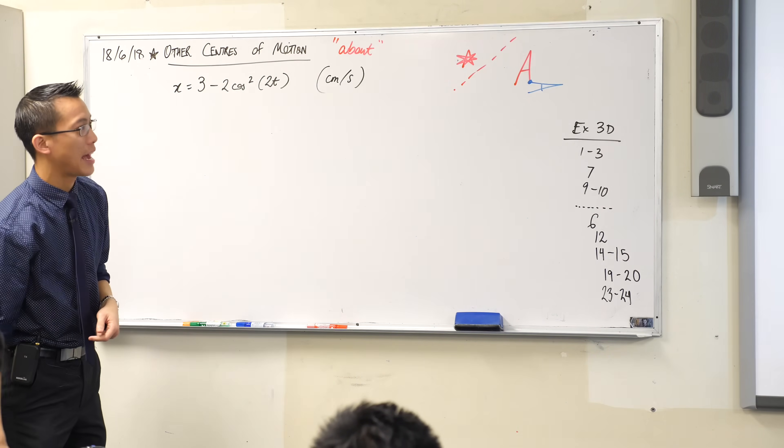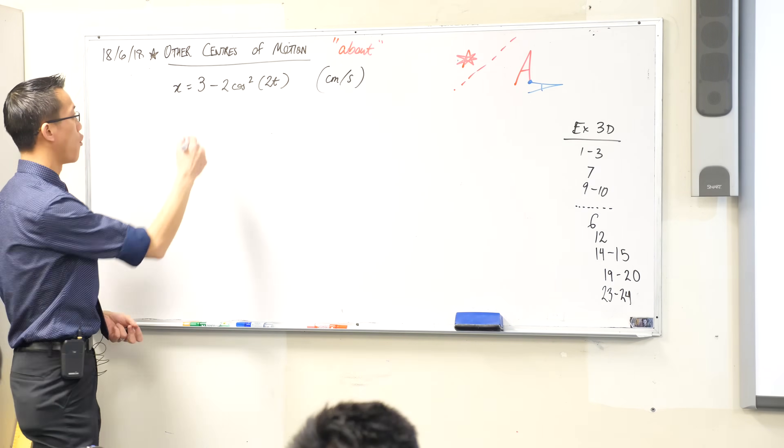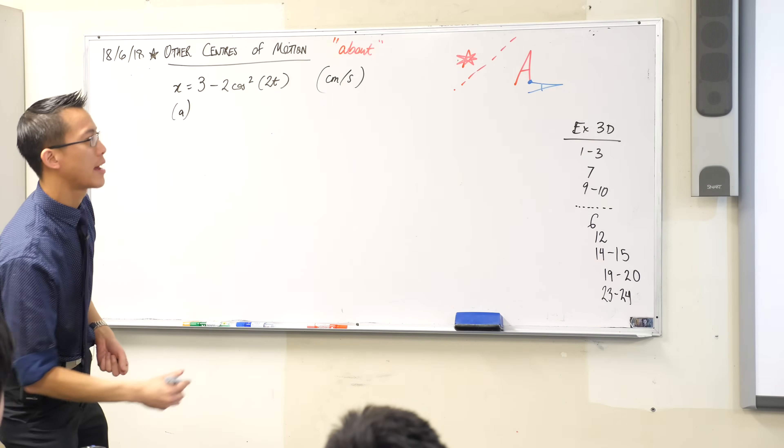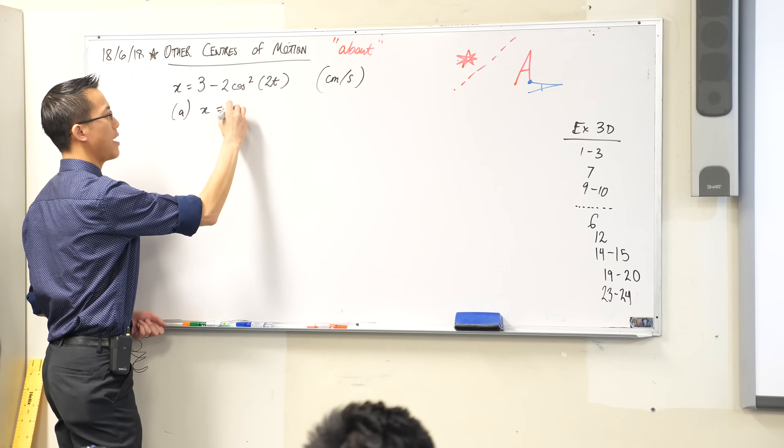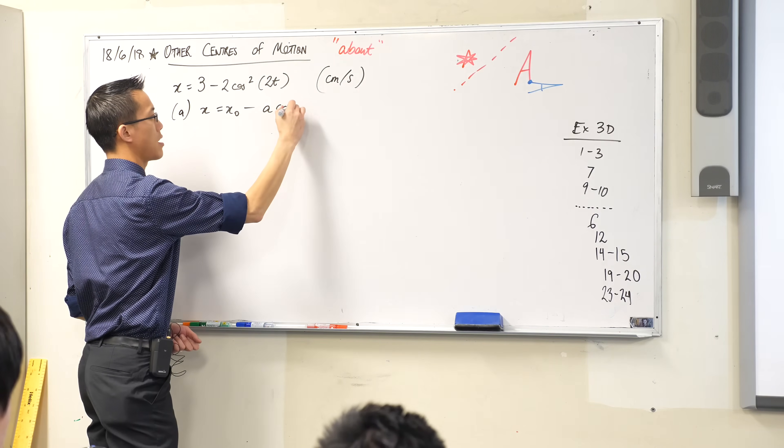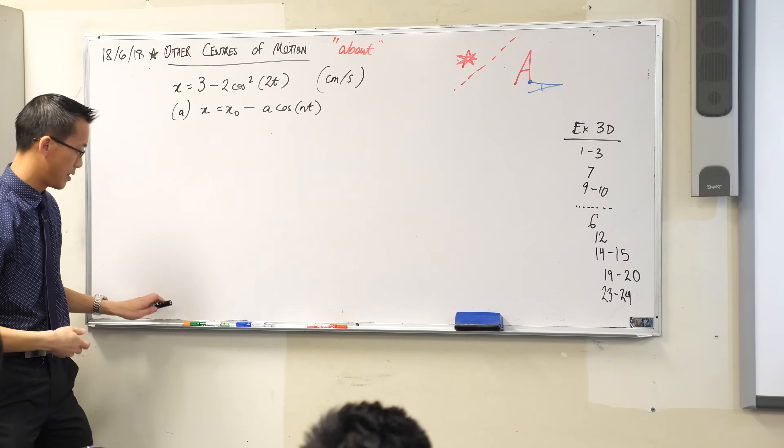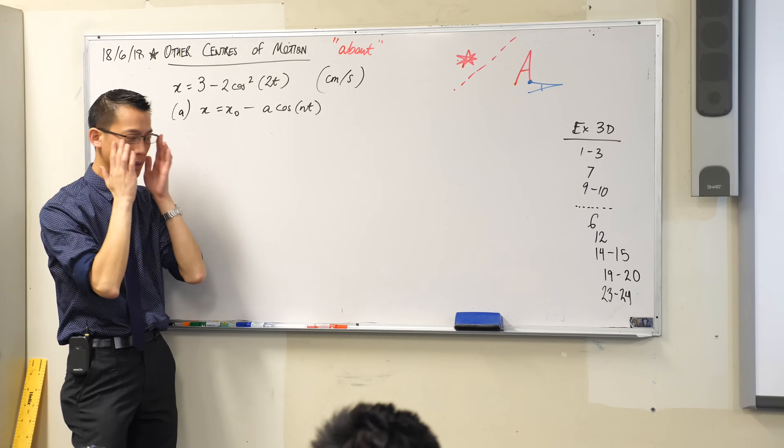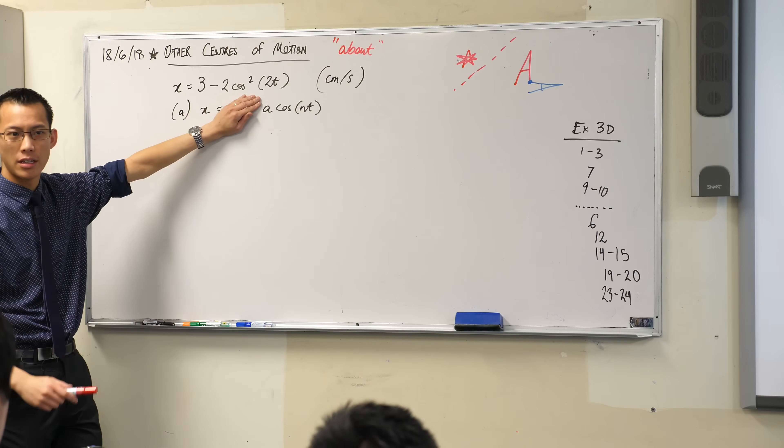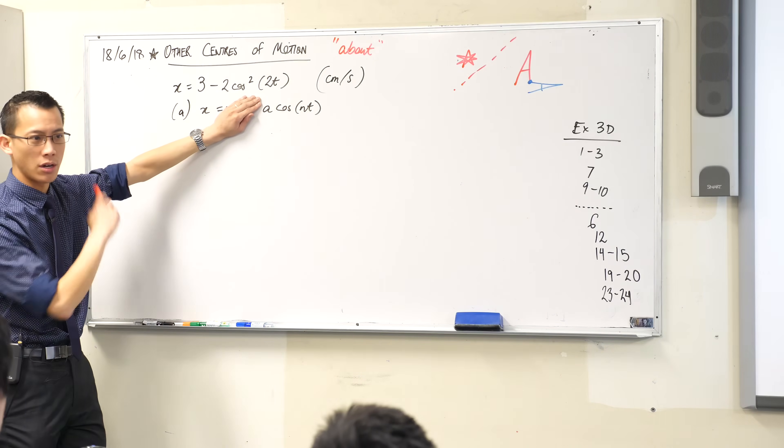So they say that's in terms of centimeters and seconds. And then in part A, they say use trigonometric identities to put the equation into a different form. So, let's write down what that form is. It says x equals x₀ minus a cos(nt). Right.